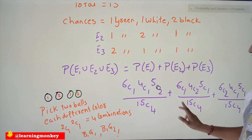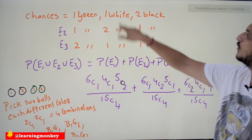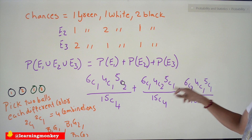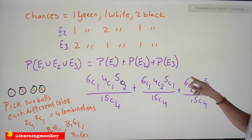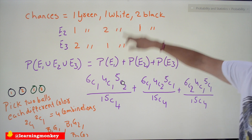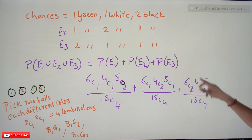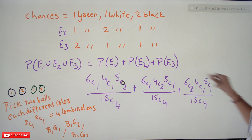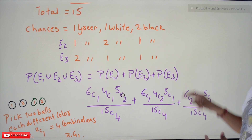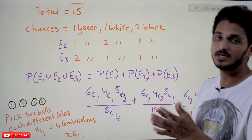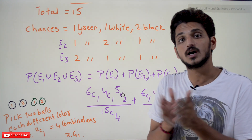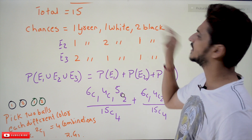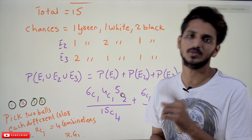So the full probability is: P = [6C1 × 4C1 × 5C2 / 15C4] + [6C1 × 4C2 × 5C1 / 15C4] + [6C2 × 4C1 × 5C1 / 15C4]. This covers all possibilities where, among the four drawn balls, green, white, and black are each represented at least once.